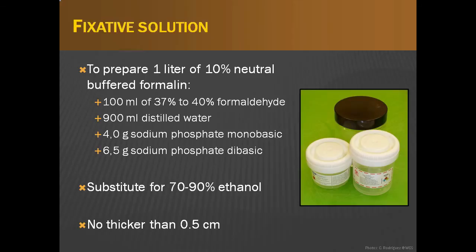10% neutral buffered formalin is the tissue fixative of choice for histopathology. This can be acquired from a commercial provider or prepared in-house. Alternatively, ethanol at a concentration of 70 to 90% can be used as a fixative. Tissue samples should not be thicker than 5 mm and should be fixed in a container with at least 9 times the volume of formalin to tissue.